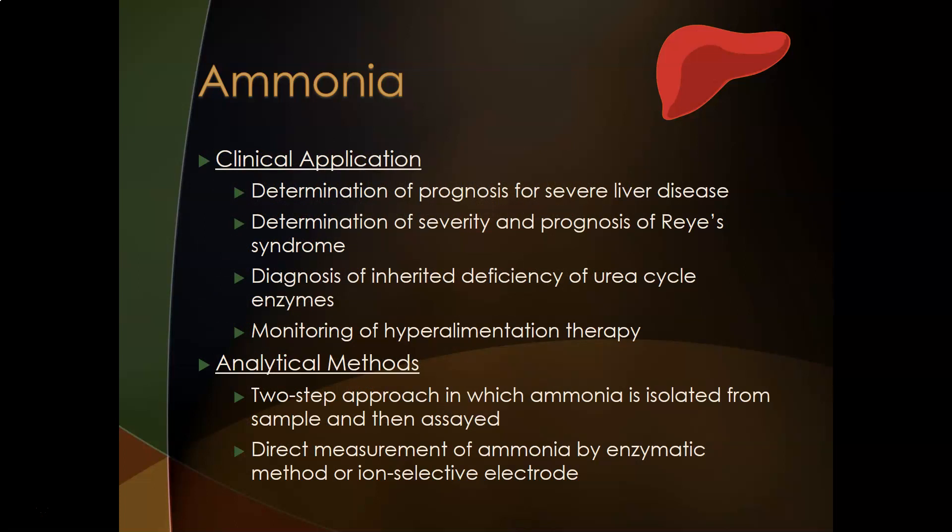The clinical applications of ammonia measurement include: determination of prognosis for severe liver disease, since the liver detoxifies ammonia — in end-stage liver disease, ammonia levels will start to climb. It can also be used to determine severity and prognosis of Reye's syndrome, to diagnose inherited deficiencies of urea cycle enzymes, and to monitor hyperalimentation therapies such as IV or NG tube nutrition.